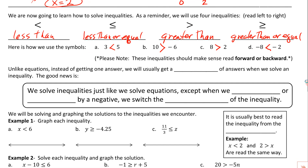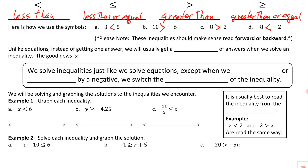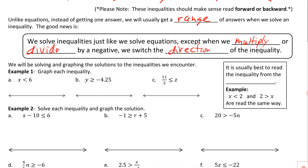Unlike solving equations where we get one answer, when we solve inequalities we get a range of answers — a whole bunch of answers. That's why when we shade the solutions on a number line, we get a big shaded area. The good news is we solve inequalities just like equations, except when we multiply or divide by a negative — then we switch the direction of the inequality, because introducing a negative means opposite, which changes things to the opposite direction.